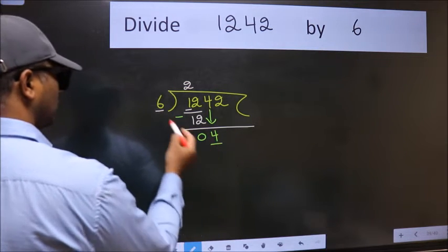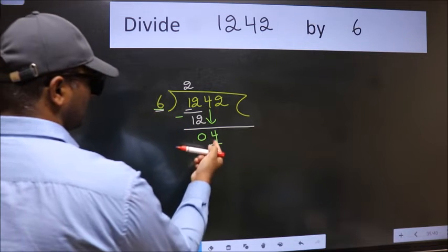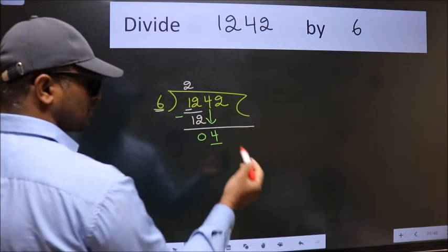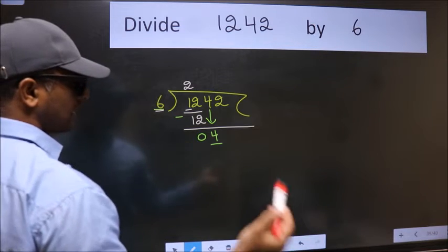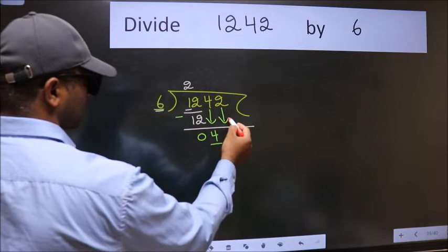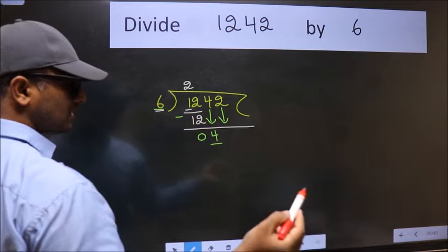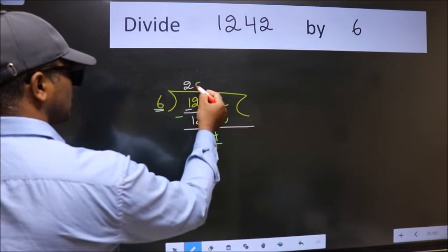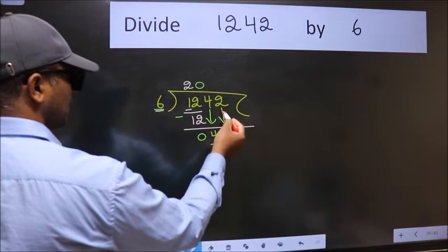Now we have 4 here and 6 here. 4 is smaller than 6, so we should bring down the second number. The rule is to put 0 here, then we can bring this number down to get 42.